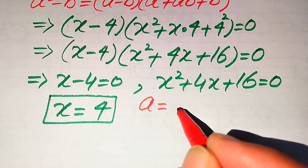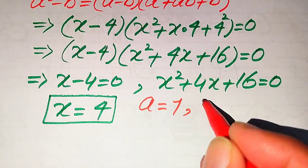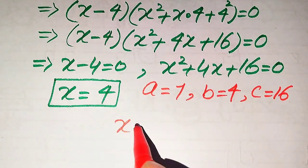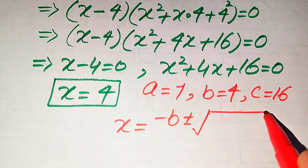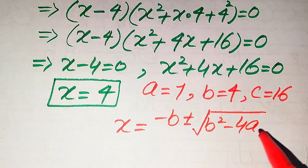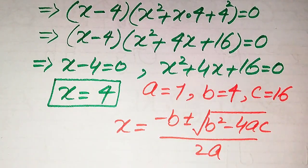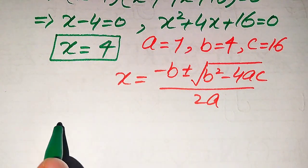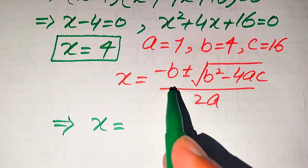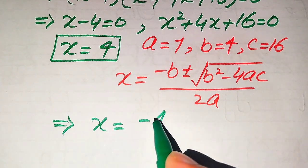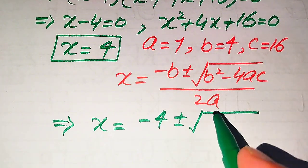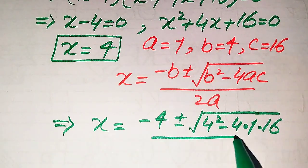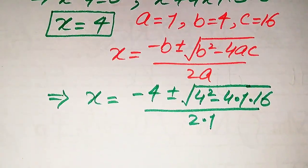First we write the coefficients of this equation: a equals 1, b equals 4, and c equals 16. The quadratic formula is x equals minus b plus or minus square root of b squared minus 4ac, divided by 2a. Substituting the values: this is minus b, the value of b is 4, so minus 4, plus or minus square root of 4 squared minus 4 times 1 times 16, divided by 2 times 1.